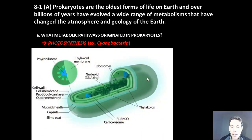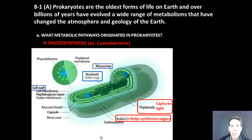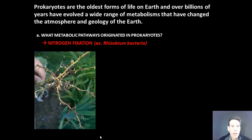Cyanobacteria are typical prokaryotic cells, meaning they contain DNA, ribosomes, a cell wall, and a cell membrane. What makes them unusual is they also have thylakoids for capturing light and enzymes for helping them create sugars. When you learn about chloroplasts, you'll see that chloroplasts also have thylakoids and the same kind of system for converting carbon dioxide to sugar — because chloroplasts evolved from a group of cyanobacteria over a billion years ago.